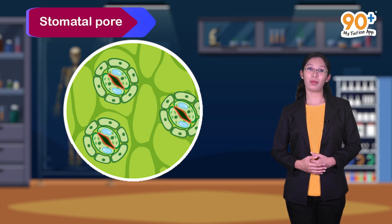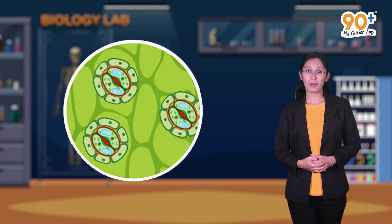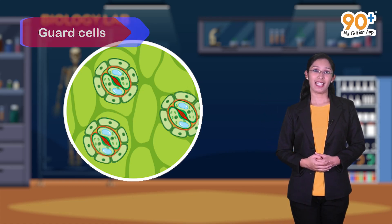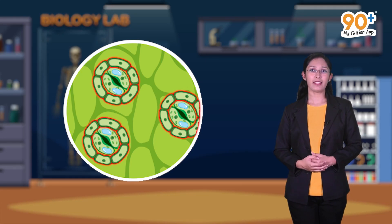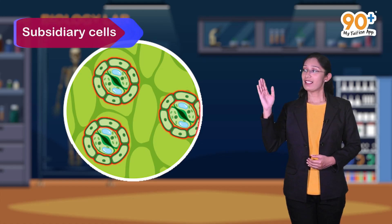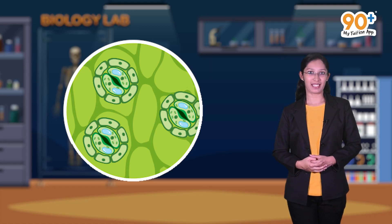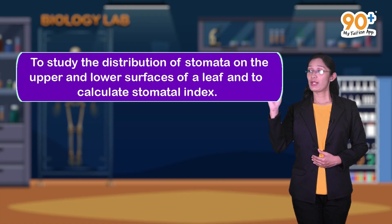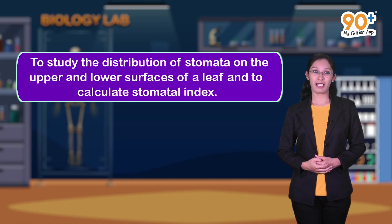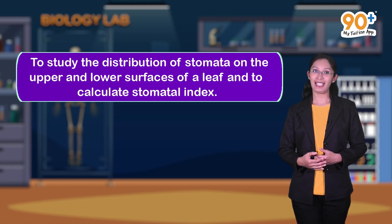We are already familiar with the structure of stomata. This slit-like opening is called the stomatal pore. The kidney-shaped structures surrounding the pore are called guard cells. There are also two or more specialized cells around the guard cells known as subsidiary cells. The major objectives of this experiment are to study the distribution of stomata on the upper and lower surfaces of a leaf and to calculate the stomatal index.